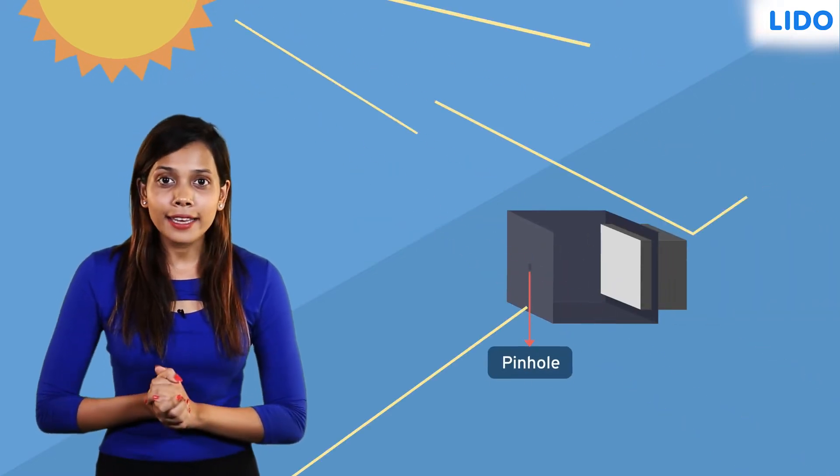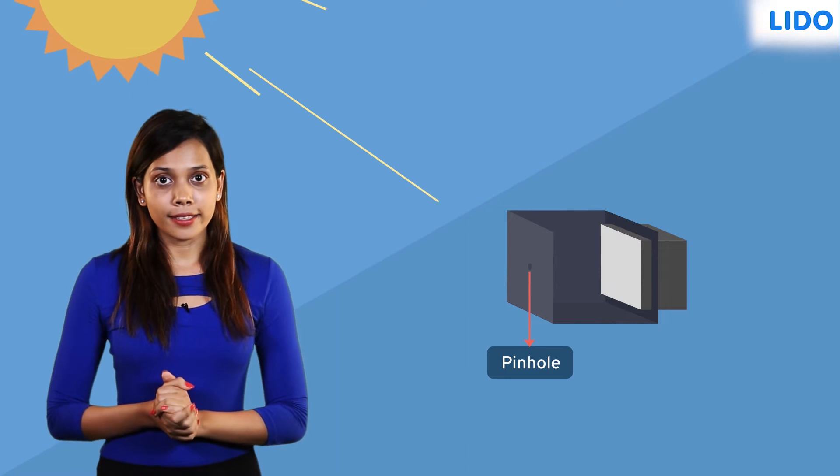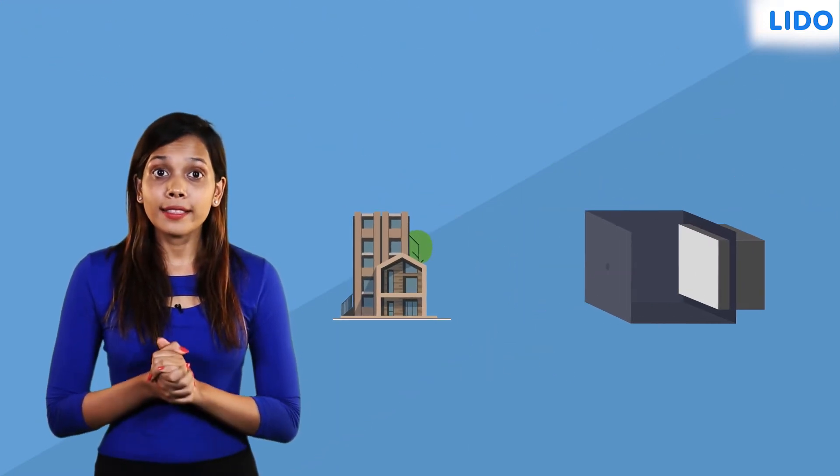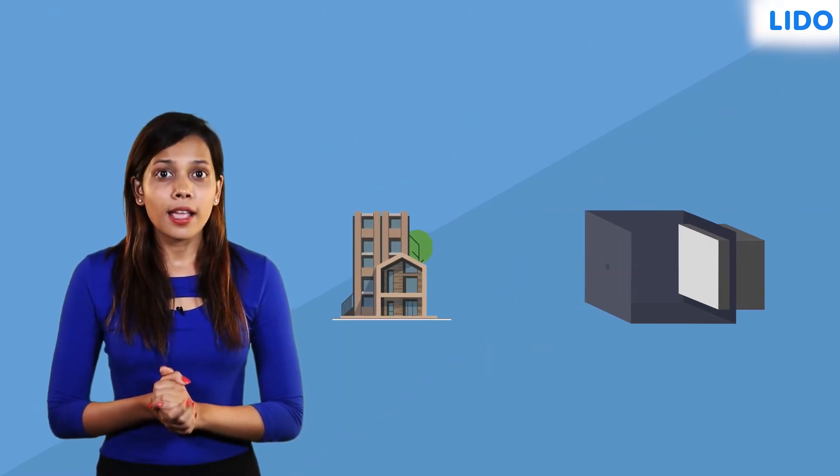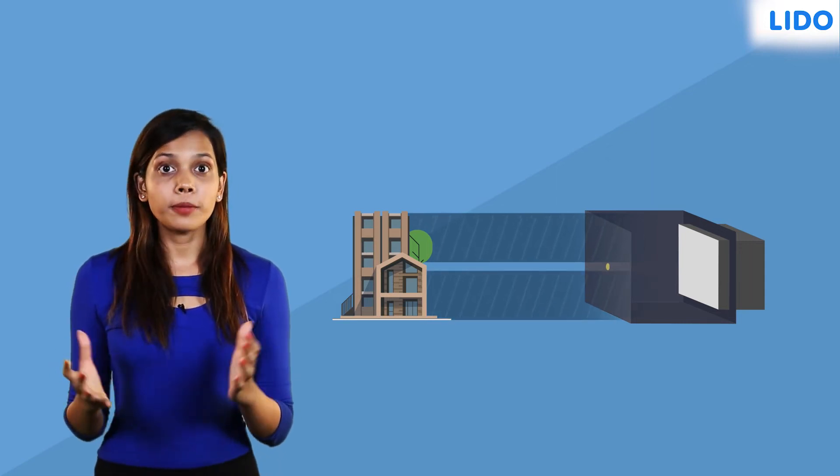A pinhole camera has a tiny hole through which the light can enter. The pinhole in this camera is located between the topmost and the bottommost points of the building.